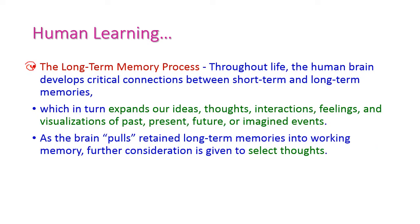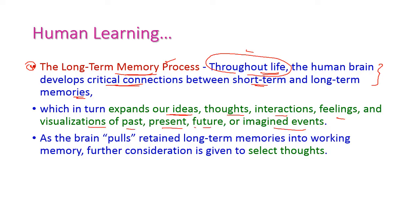The fourth component is the long-term memory process. Throughout life this memory persists, and the human brain develops critical connections between short-term and long-term memory. It expands our ideas, thoughts, interactions, feelings, and visualization of past, present, and imagined future events. The brain pulls retained long-term memory into working memory, and decisions about what to think and do are taken at this moment.